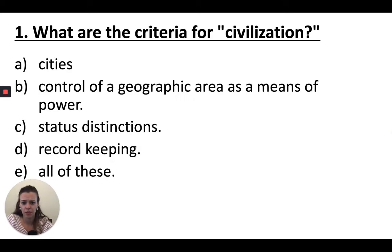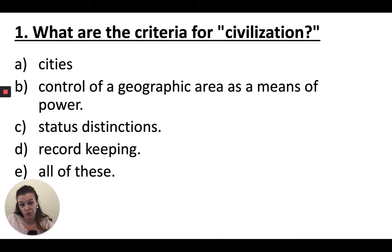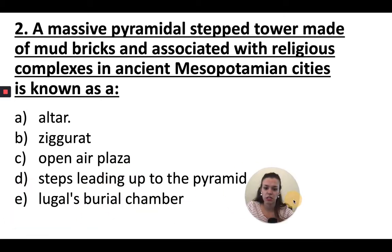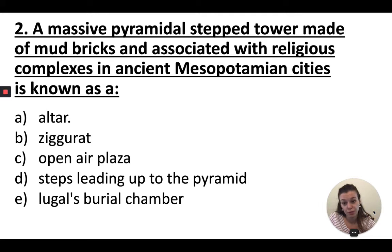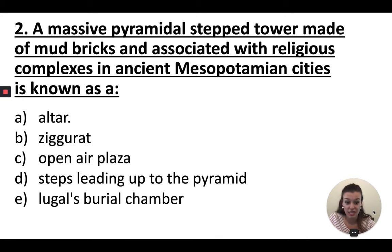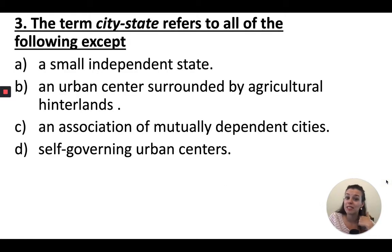Number one: what are the criteria for a civilization? Which of these — A, B, C, D, or E — is the correct answer? What counts as a civilization? I'm going to move through this quickly because you can pause and take as much time as you need. Number two: a massive pyramidal stepped tower made of mud bricks and associated with religious complexes in ancient Mesopotamian cities is known as a what?